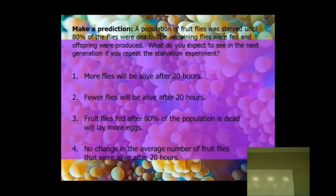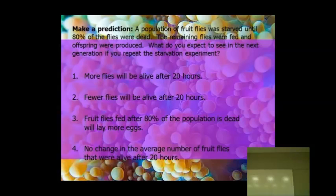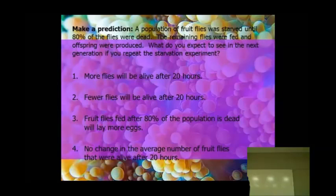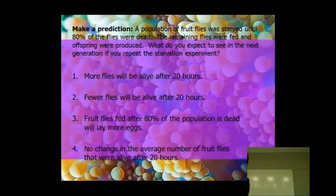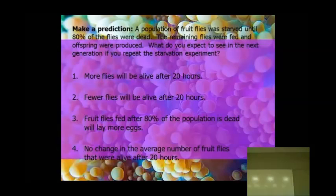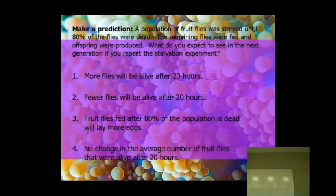This would be like an example if I were to ask this on a test: A population of fruit flies was starved until 80% of the flies were dead. The remaining flies were fed and the offspring were produced. What do you expect to see in the next generation if you repeat the starvation experiment? Will you have more flies alive after 20 hours, fewer flies alive after 20 hours, fruit flies fed after 80% of the population is dead will lay more eggs, or no change in the average number of fruit flies that were alive after 20 hours? The answer is you'll have more flies that will be alive after 20 hours.